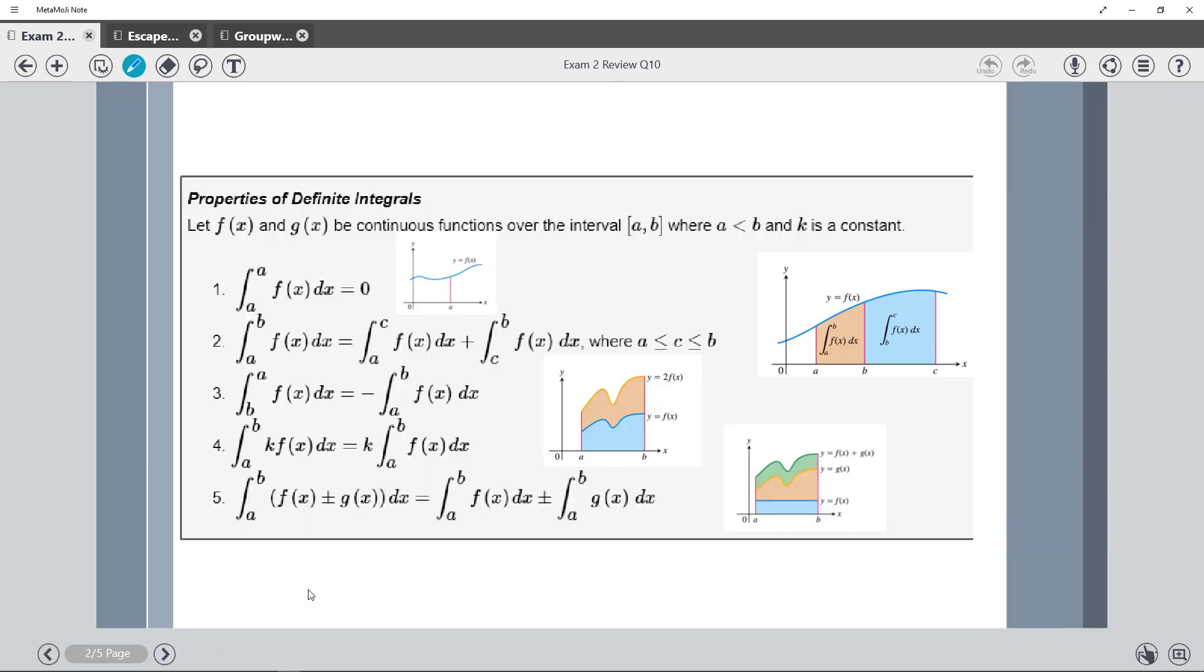There are all these properties of definite integrals, and some of the things to note when you're looking at these is look at the lower and upper limits. So this interval here goes from A to A. Hopefully that should make sense why that would be zero. There's moving from A to A, no area.